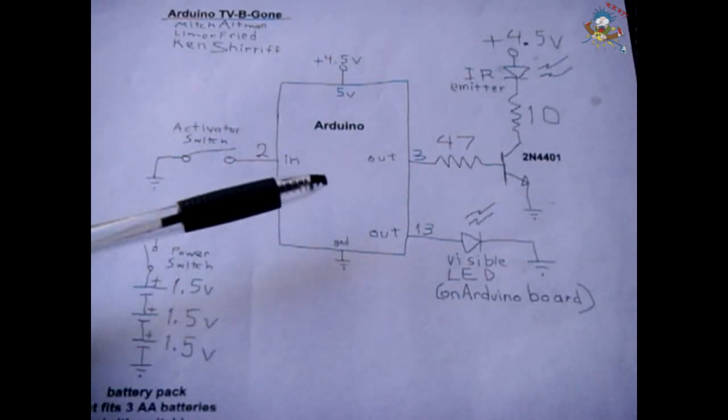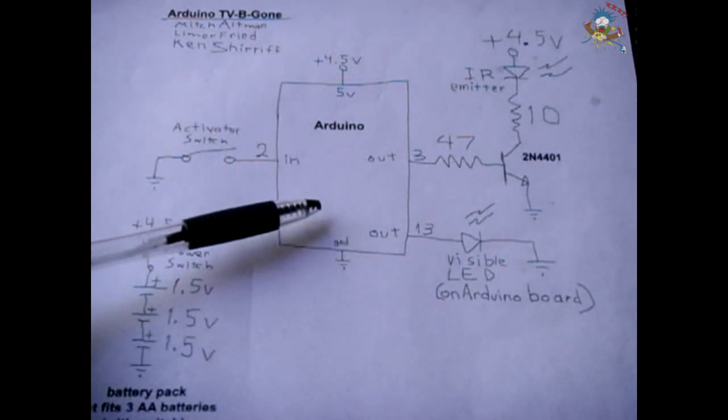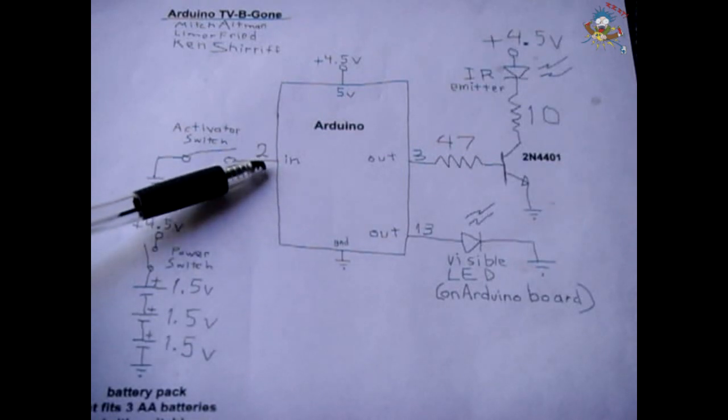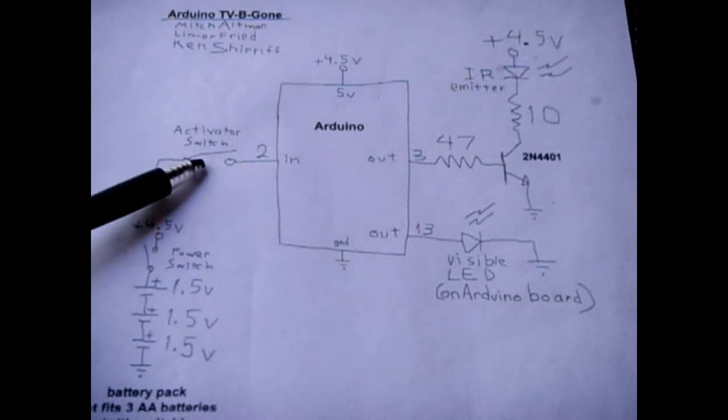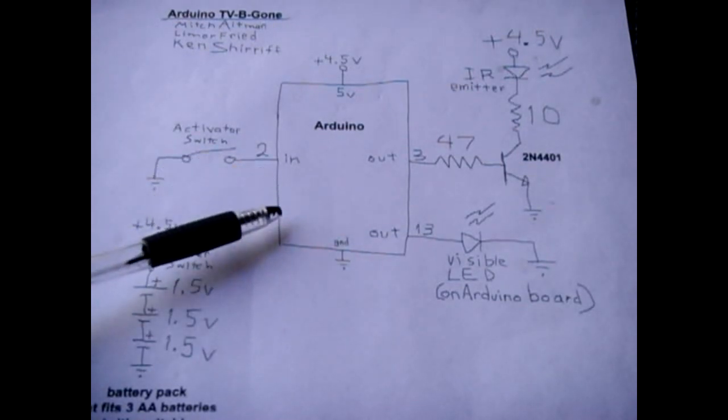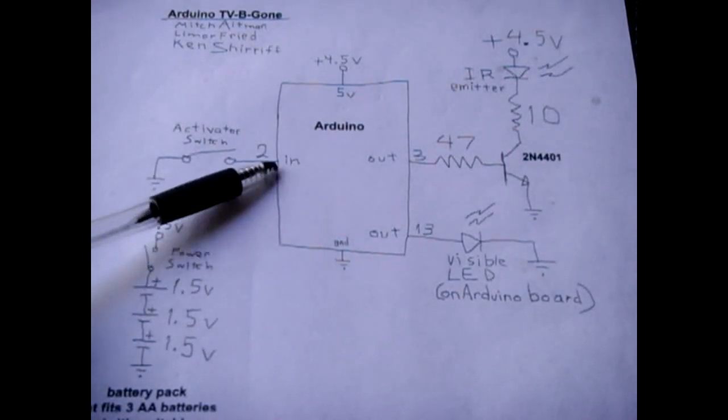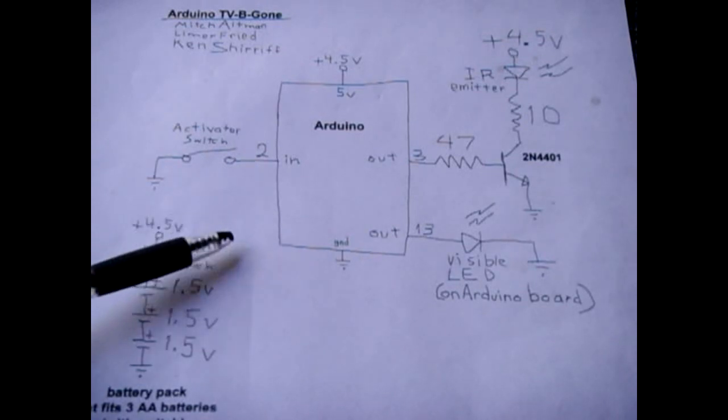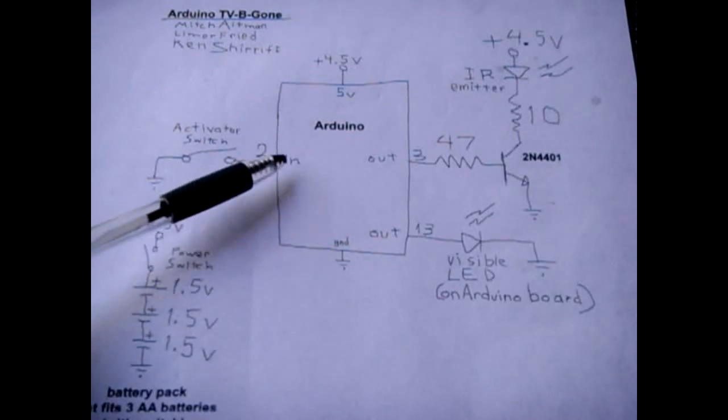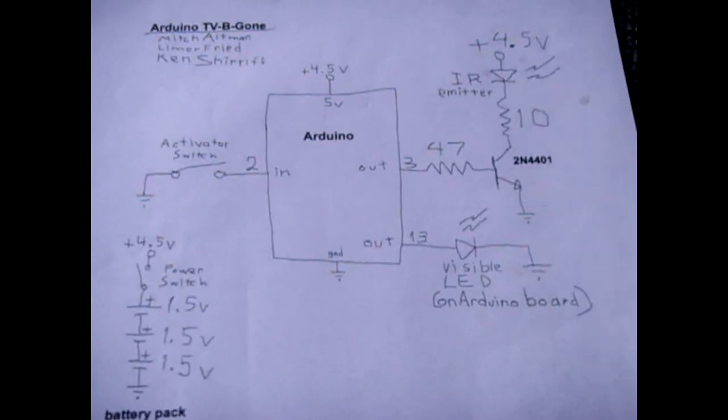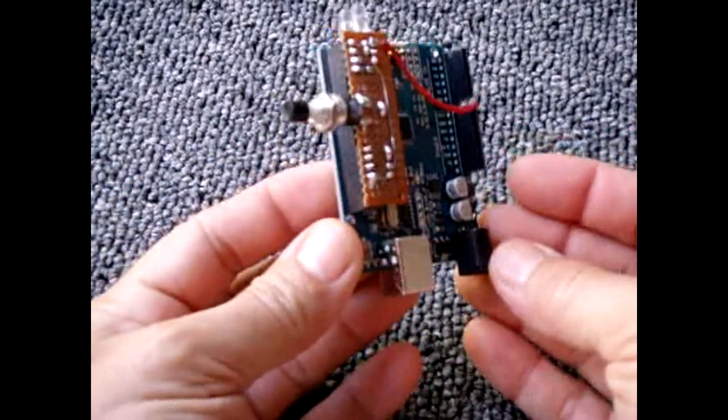Once the Arduino TV-B-Gone device is powered up, in order to trigger it to go through all the codes to search for the code that will turn your TV off, you're going to have to ground pin 2, and that is why you're going to need the normally open push button switch. Now if you're going to be using this in Europe, you're going to have to connect pin 5 of the digital outputs to ground as well, and what that does is activates the European code scanning for the Arduino. And that is about it—you're looking at an extremely simple device to put together.